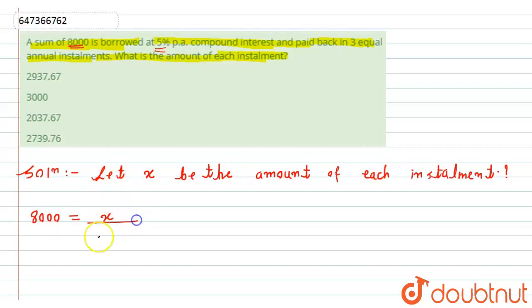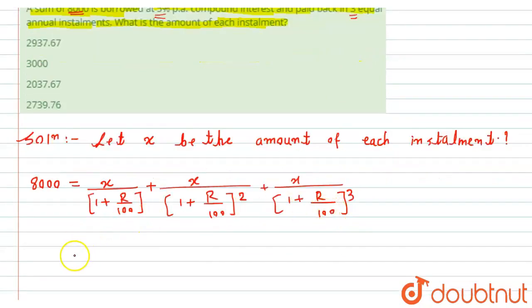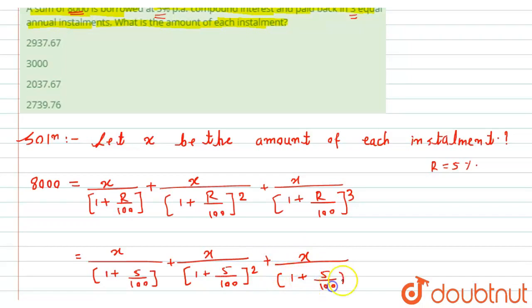Installment x divided by 1 plus rate, that is, r divided by 100, raised to 1. Rate is how much? 5 percent. So, agar rate rakh dete hai, toh ye ho jayega x divided by 1 plus 5 divided by 100. Plus x divided by 1 plus 5 by 100, it's square. Plus x divided by 1 plus 5 divided by 100, it's cube.